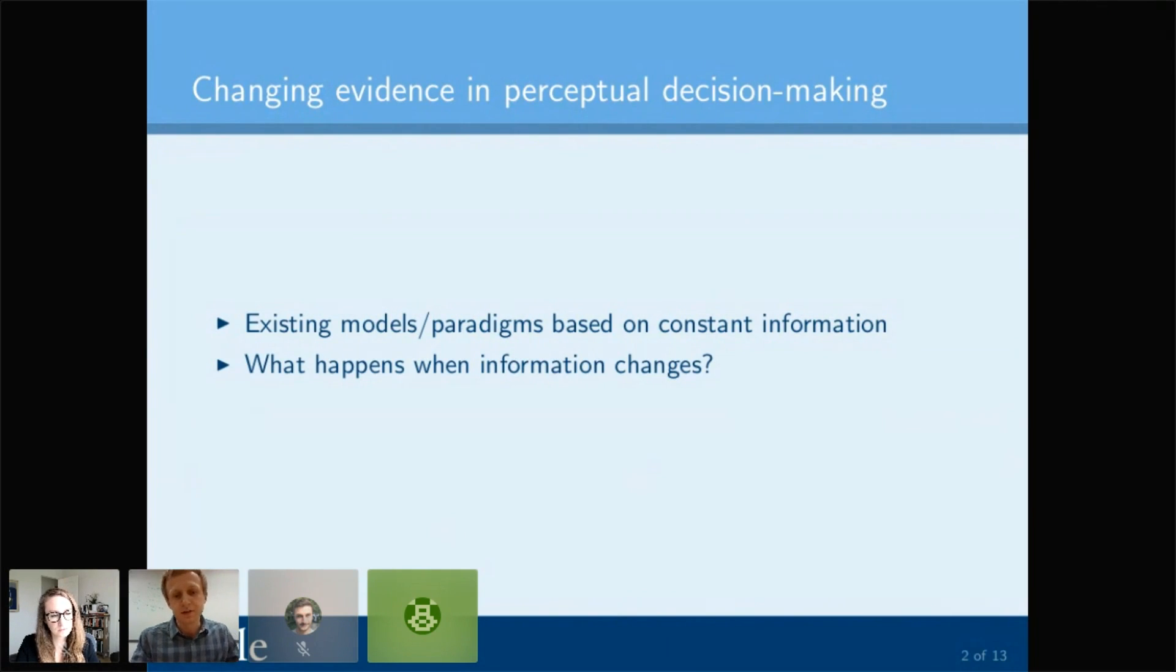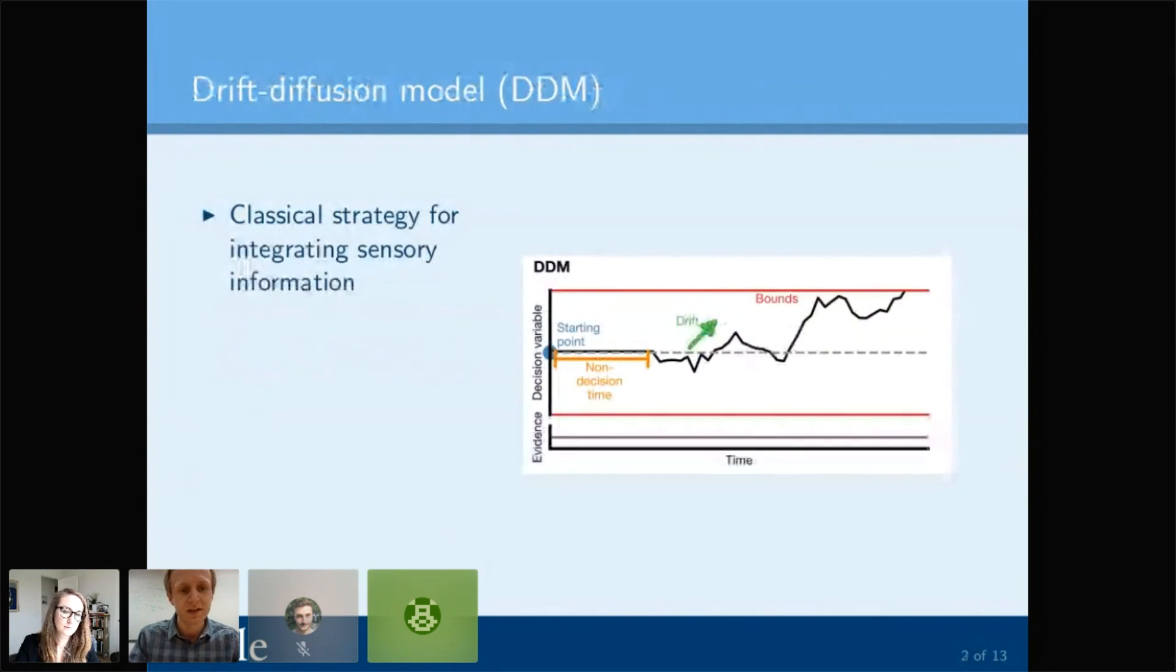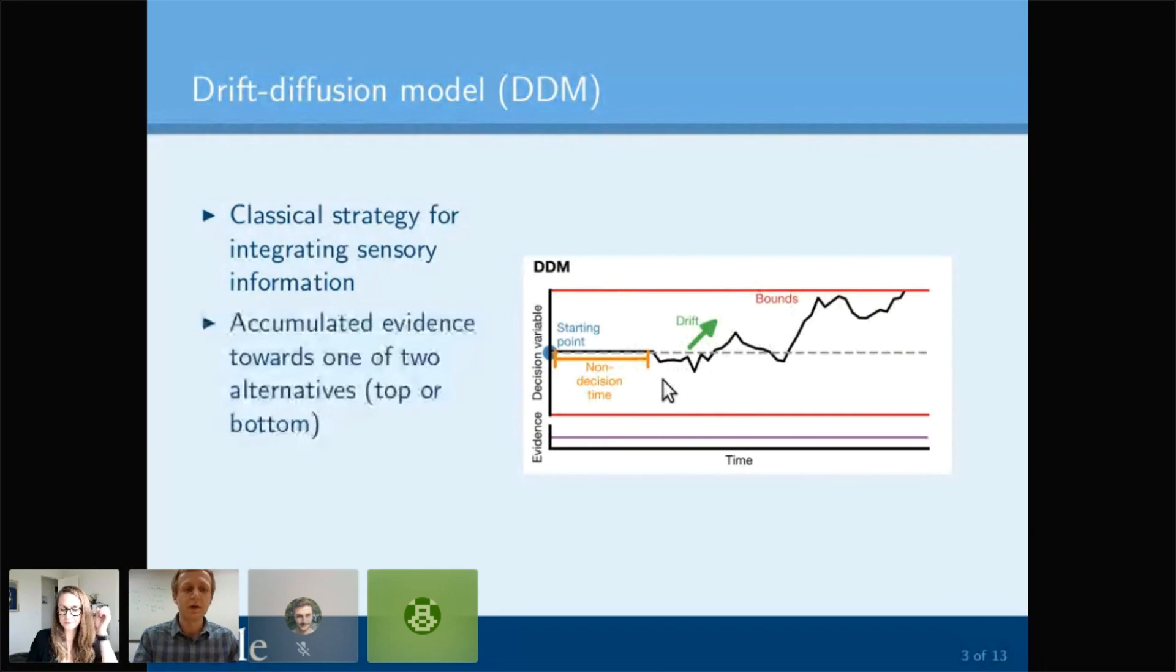One of the limitations here is that we tend to think about perceptual decision making in terms of the drift diffusion model. The drift diffusion model is a model for two alternative forced choice tasks where we have two alternatives represented by two bounds. As we get evidence for one of the alternatives, we tend to drift in that direction. We make the decision when this decision variable crosses the bound. One of the limitations is that it's only one single strategy, and it really only accommodates a single type of task, which has evidence that is constant over time.